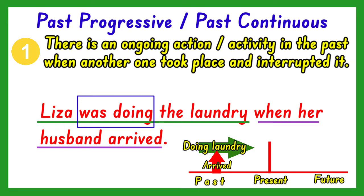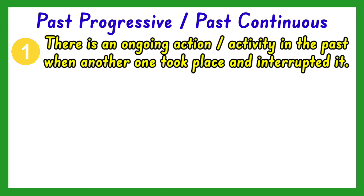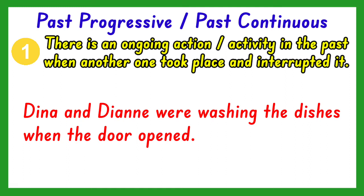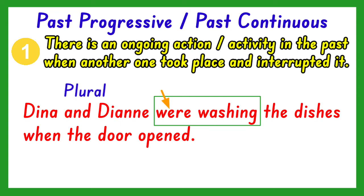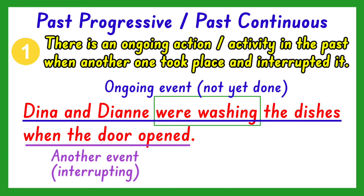You should also take note that in this example, the verb of the second event is in the simple past tense. Only the verb in the first event is in the past progressive form, because this is the only action that was going on for a period of time. Another example: Dina and Diane were washing the dishes when the door opened. The past progressive tense of the verb in this sentence is were washing. Were is used because the subject is plural — Dina and Diane. Only the action in the first event is in the past progressive form; the action in the second event is in the simple past.